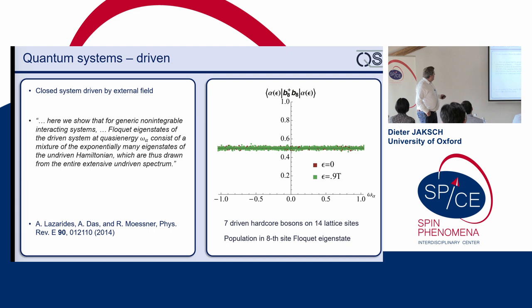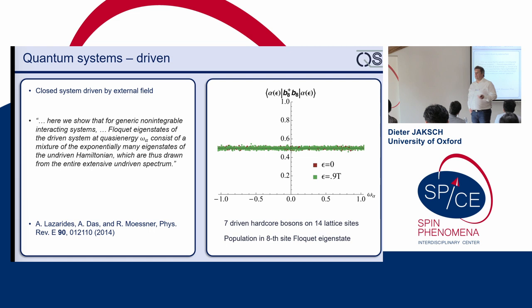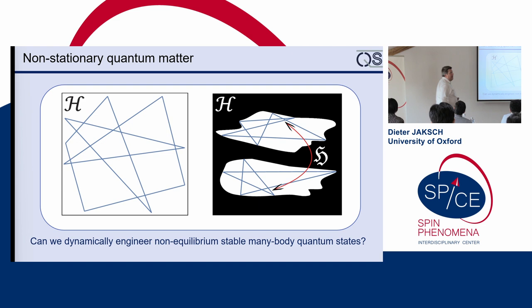What they conclude is that Floquet eigenstates contain a mixture of exponentially many eigenstates from the undriven Hamiltonian — basically all of the spectrum. As an example, they show the occupation of a site in a driven system for various quasi-energies, and you see it is basically always one-half and doesn't change much. So it seems that all the usual rules and laws point toward quantum systems just equilibrating and going into thermal equilibrium very quickly.